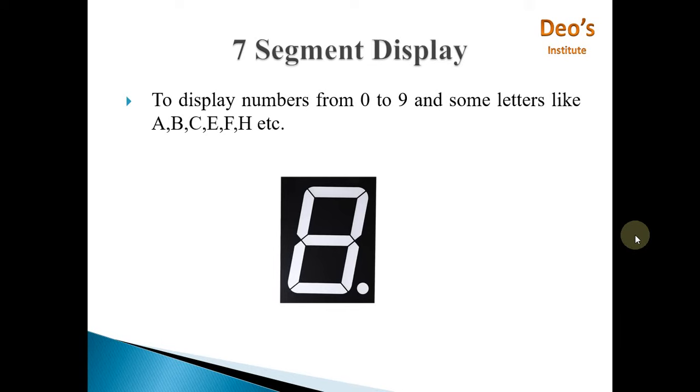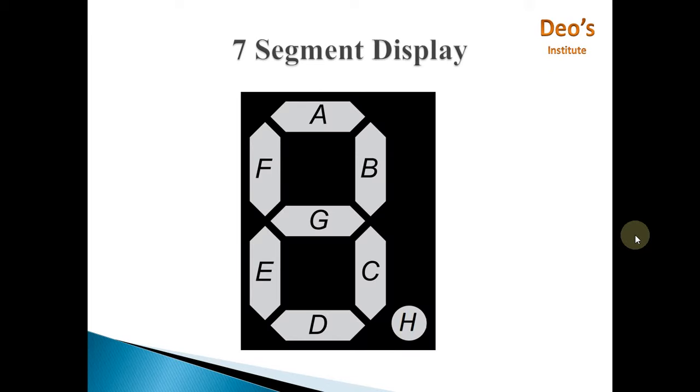This 7 segment display consists of 7 LED segments and 1 decimal point. So these 7 segments are named as A, B, C, D, E, F, and G.